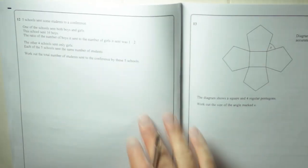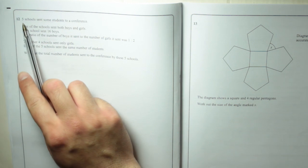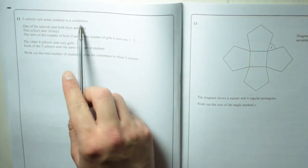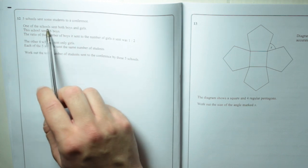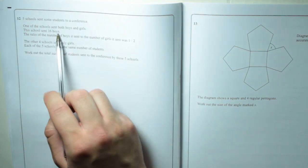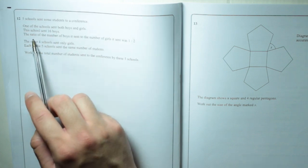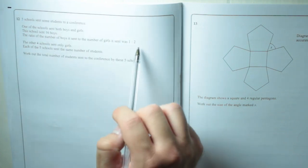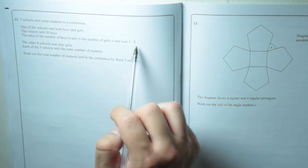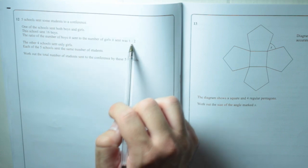Okay, another question about a real-life type thing. Five schools sent some students to a conference. One of the schools sent both boys and girls. This school sent 16 boys. The ratio of the number of boys it sent to the number of girls was 1 to 2, so that means there were twice as many girls as boys.